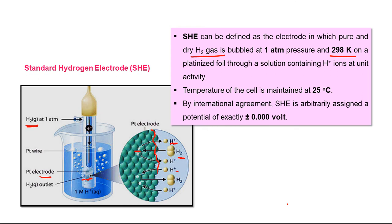The conditions are fixed: one atmosphere pressure, 25 degrees Celsius room temperature, on a platinum foil, through a solution containing H⁺ ions at one molar unit activity. By international agreement and general convention, SHE is arbitrarily assigned a potential of 0.000 volts — simply remember it is 0 volt.